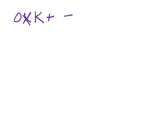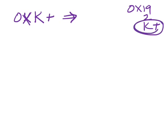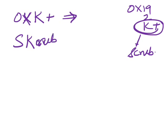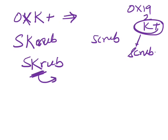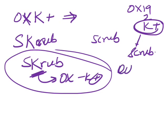Which Rickettsia gives a Weil-Felix reaction positive? You can have OX-19, OX-2, and OX-K positive. OX-K positive is only one condition — scrub typhus. How to remember it? Spell scrub as S-K-R-U-B instead of S-C-R-U-B — the K gives you OX-K positive. This is a very frequently asked question: OX-K positive is scrub typhus.